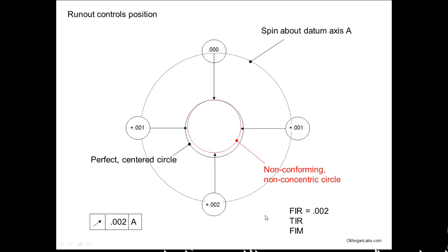Here again, a perfect circle but it's a little off-center. Your dial indicator would pick that up. If you look here, you go out to a reading but you don't go in any, so your runout would be 2.